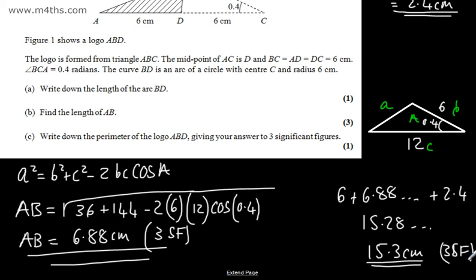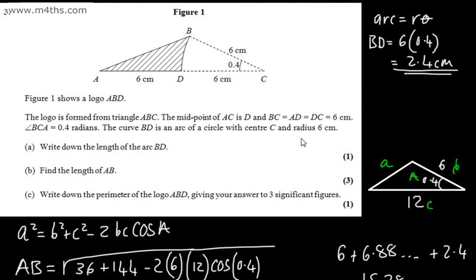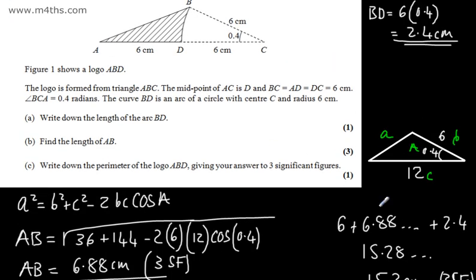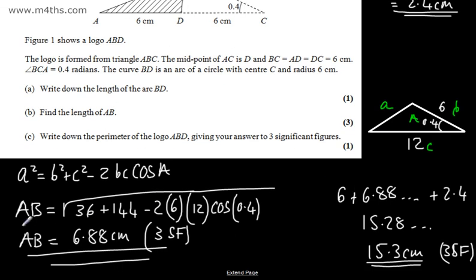So all we've done here is simply taken AD which is the 6, we've taken AB which is our 6.88, and we've added the 2.4 which is the arc length.